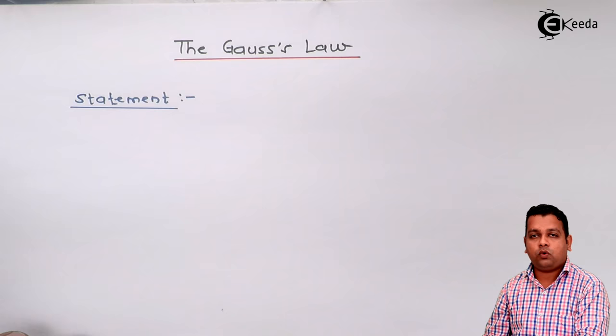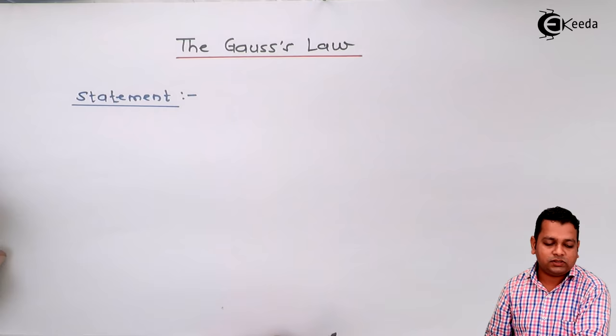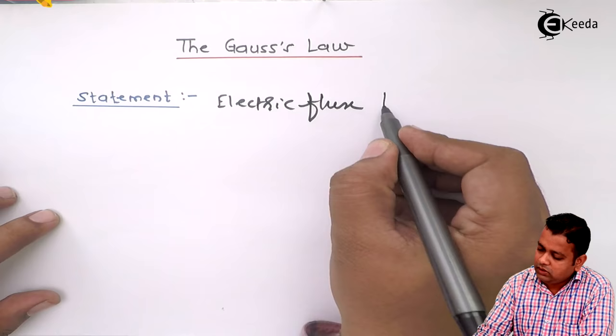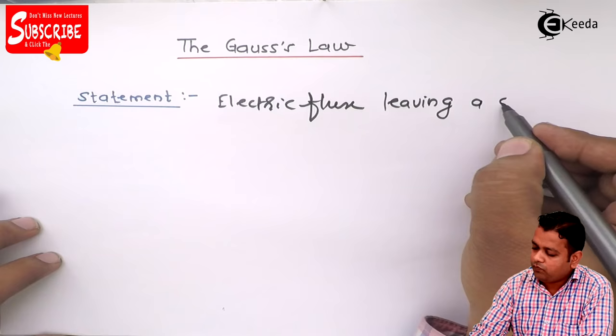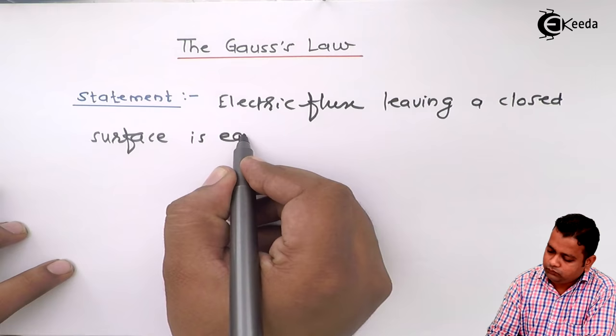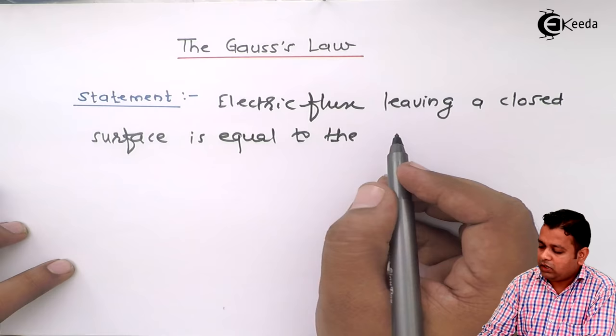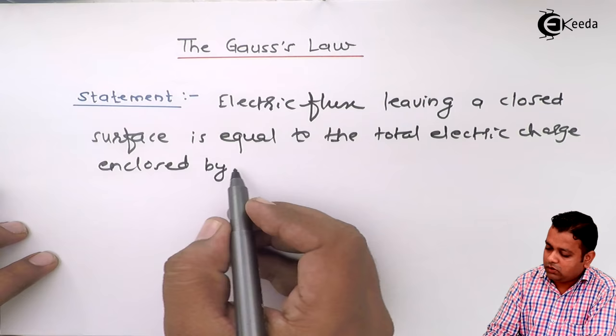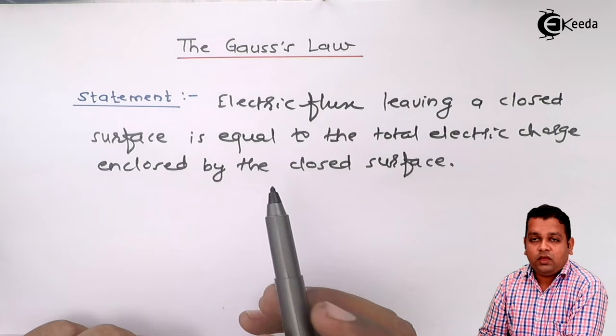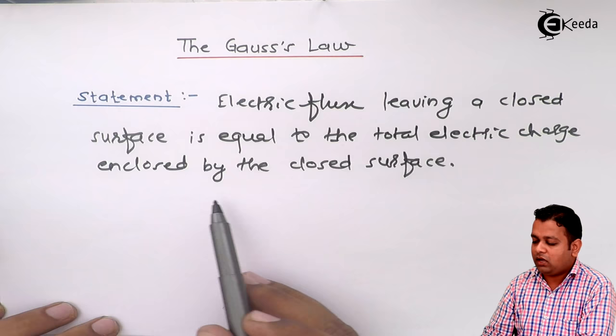According to Gauss Law, the statement is: the electric flux leaving a closed surface is equal to the total electric charge enclosed by that closed surface. I repeat — the electric flux leaving a closed surface is equal to the total electric charge enclosed by the closed surface.